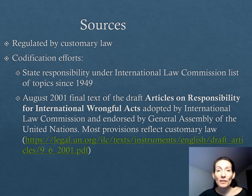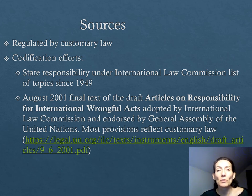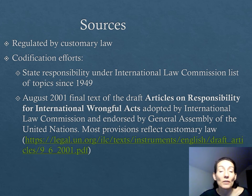The rules of general international law governing international responsibility of states are customary law. For decades, the International Law Commission worked on codifying the rules on international responsibility with the objective of serving as a draft for a treaty on the subject. However, in 2001, states decided within the General Assembly of the United Nations that it was better to endorse the final draft articles submitted by the International Law Commission as a resolution of the General Assembly. Since then, the articles on responsibility for internationally wrongful acts are considered the codified articulation of customary law in this area, and we will use them as such.